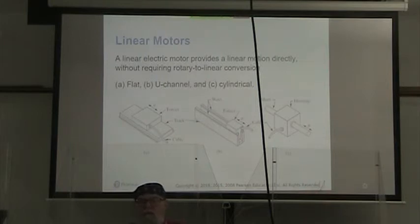Our linear motors give us a direct linear motion instead of having to convert a rotary motion to linear motion. It can be flat as in the illustration of section A of the diagram. It can be a U-channel type as we see in section B of the diagram. Or it could be cylindrical where the shaft is moved back and forth through a housing.